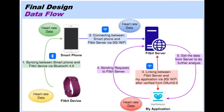In my application, it needs a verification from OAuth 2.0 to get an access token for requesting any data. After that, requests can be sent to the Fitbit server and download the raw data to do further analysis in my application.